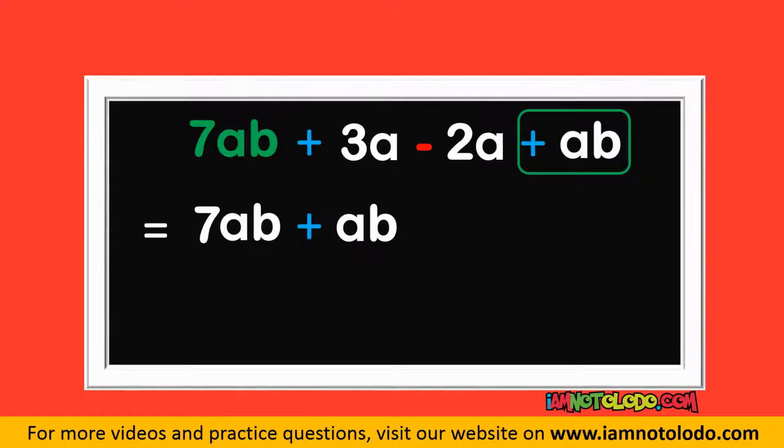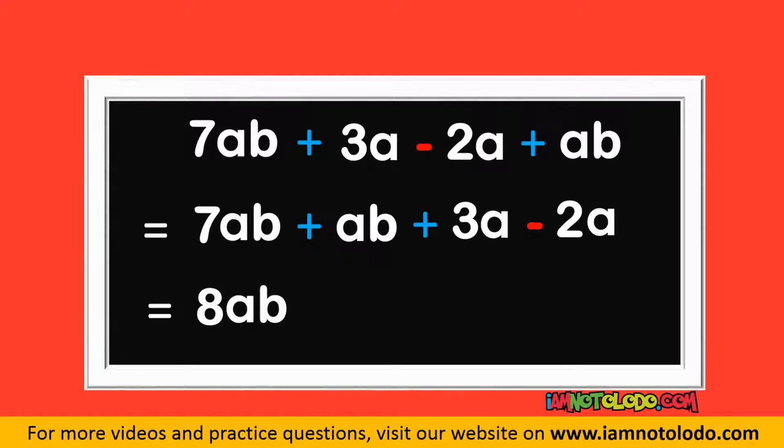The next is this: write it with a sign, plus 3A. And the final one, minus 2A. So this becomes 7AB plus AB is what? Remember, they have the same alphabet, so we can add. Meanwhile, this one does not have any number. Automatically, what does it mean? In algebra, it means there is an invisible 1 here. So 7 plus 1 is 8. Then write down the alphabet.